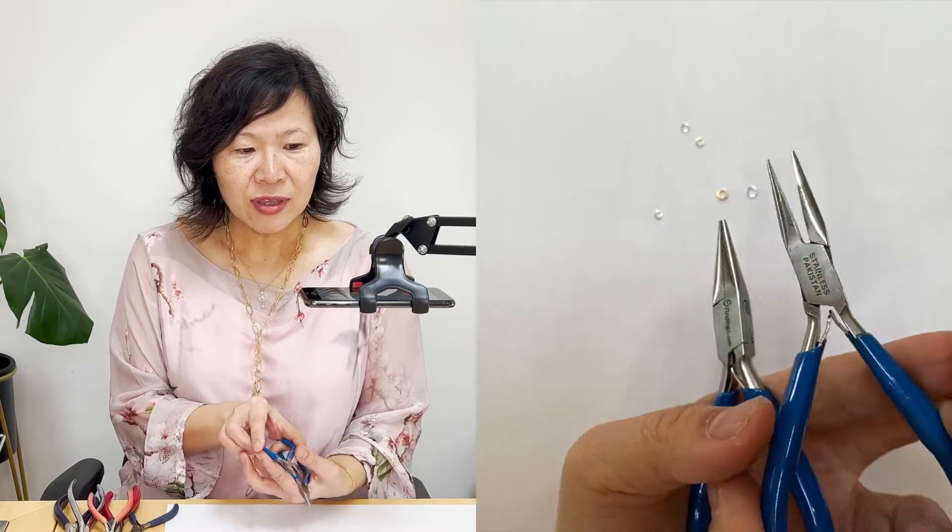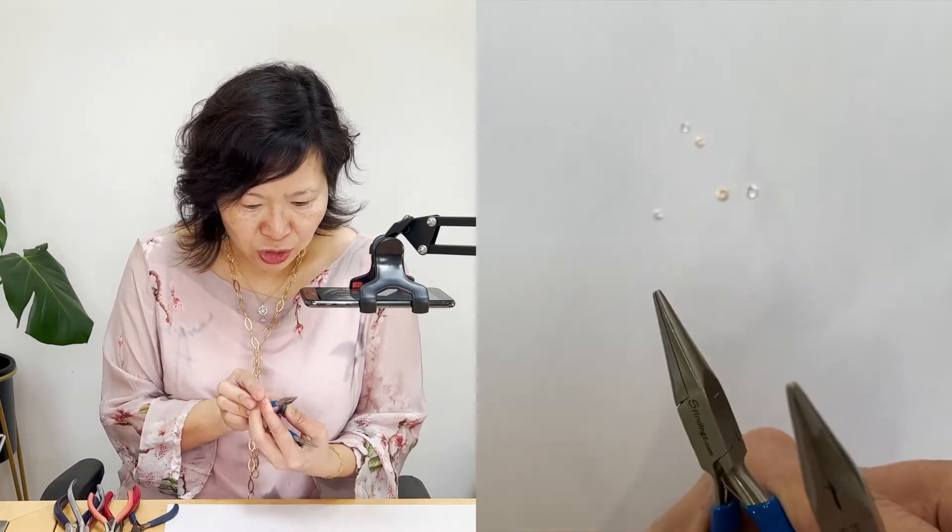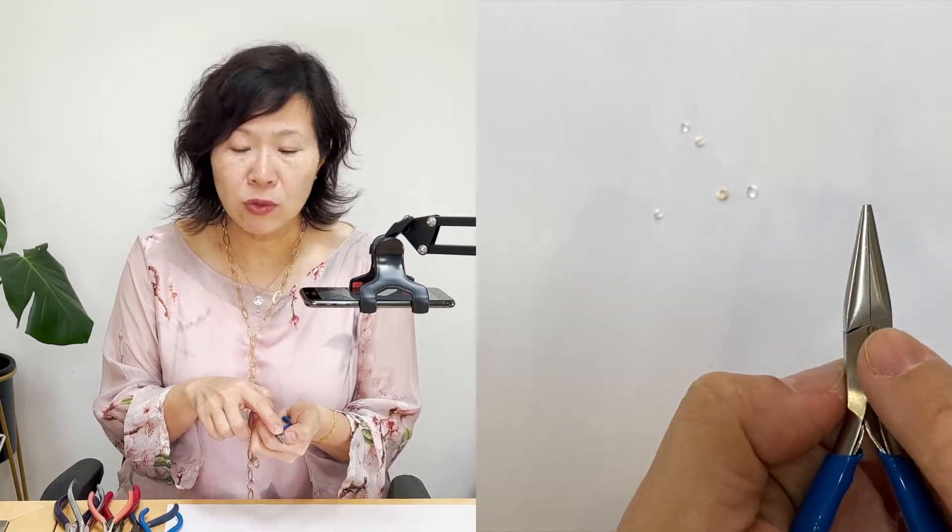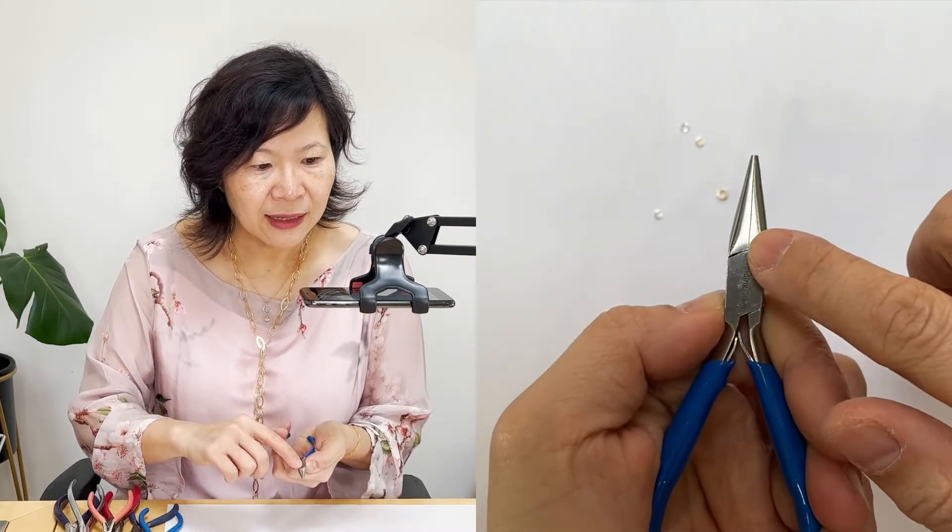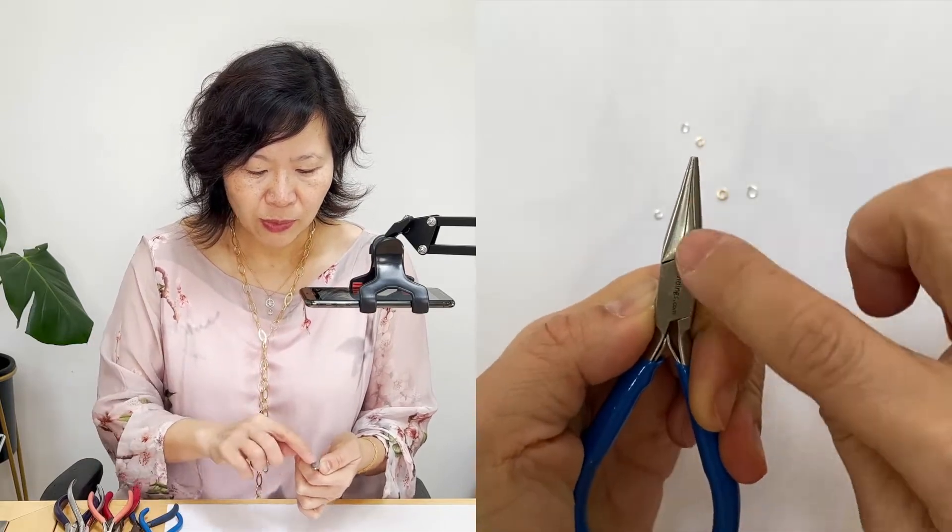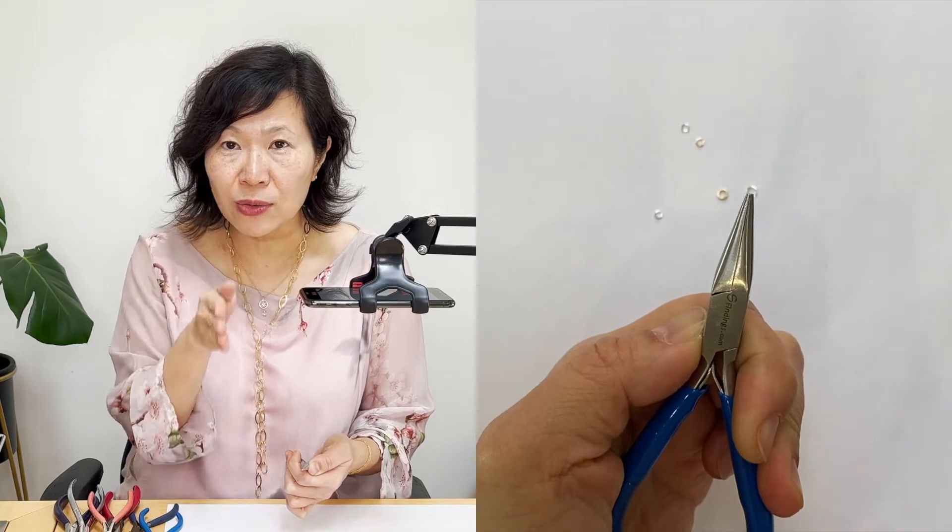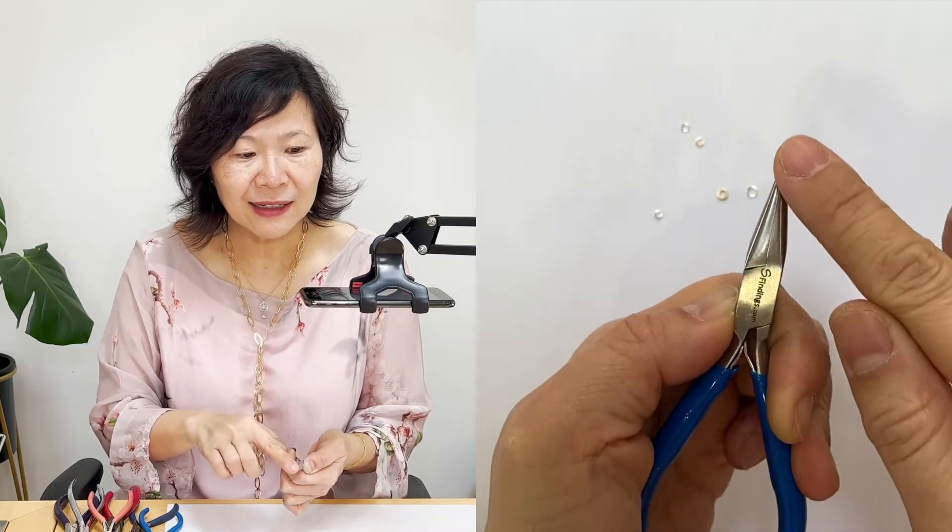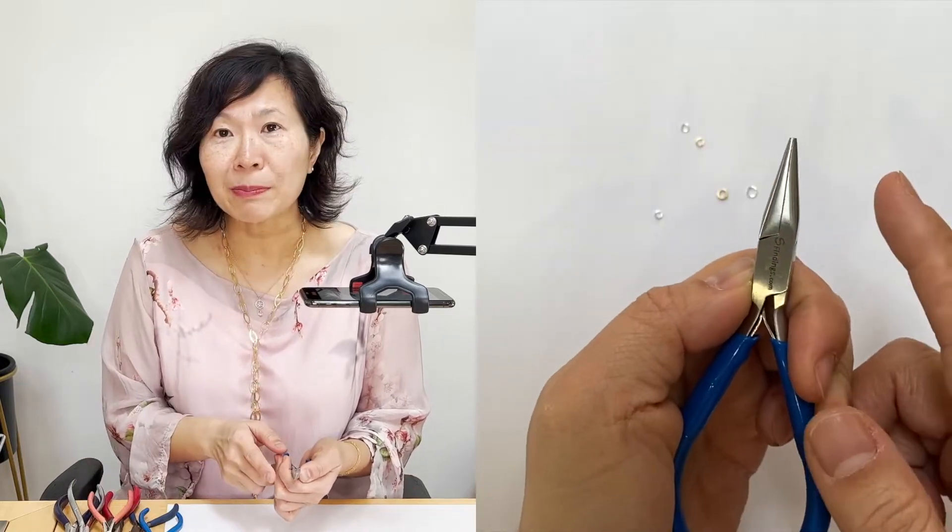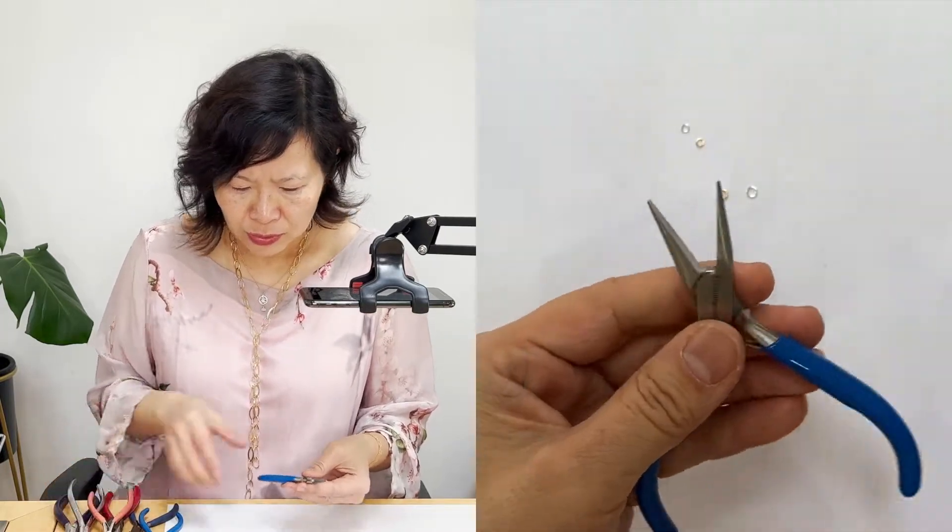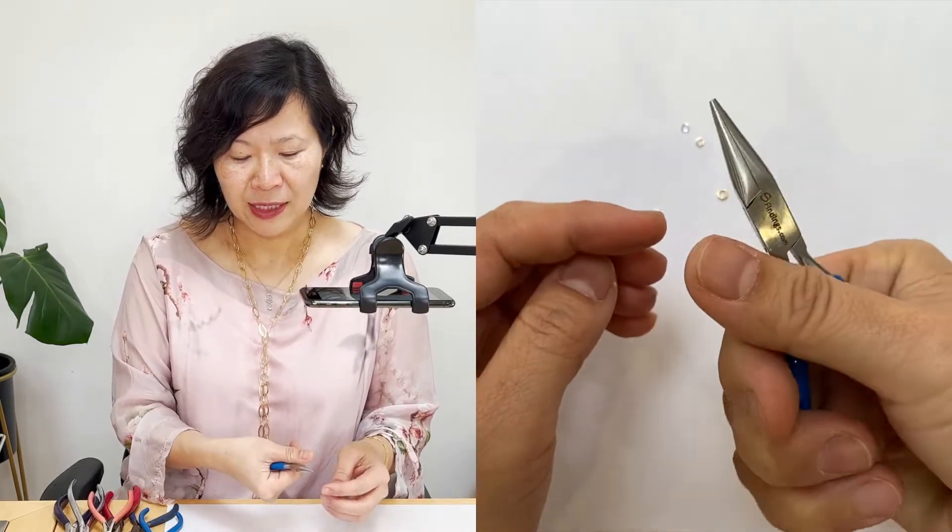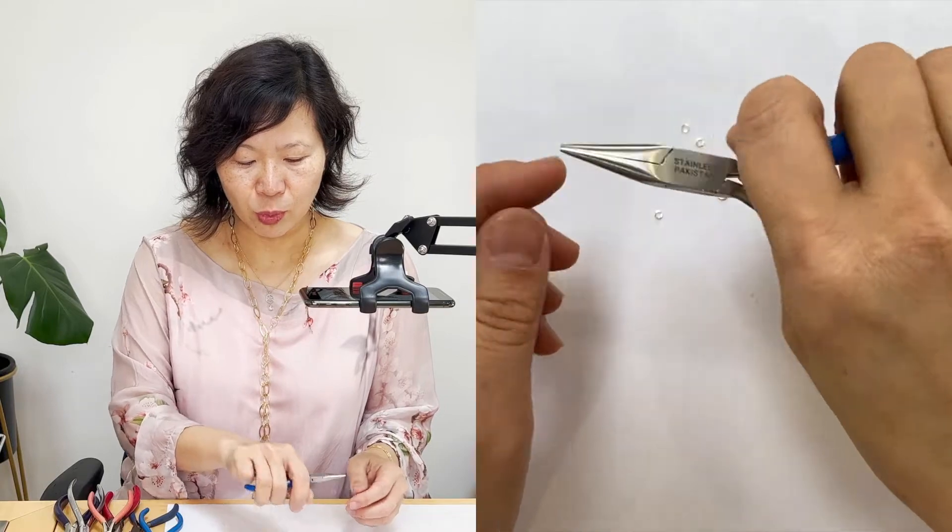And the other thing is when you are choosing your pliers, what you want is there not to be a gap. So when it closes, it's closed flat like this without any sort of bumps. That way you're getting something of good grip and it works nicely.